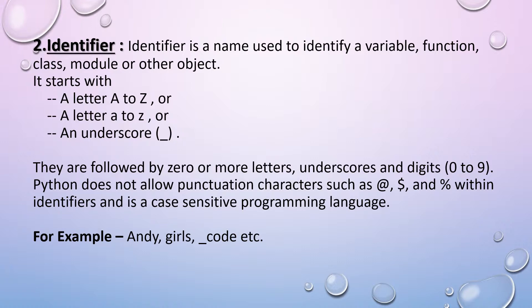So they are followed by zero or more letters, underscores and digits 0 to 9 means after using these three words in any of the identifier, we can follow it by any letter or digit or any of the punctuation characters like at the rate dollar or percentile. But these punctuation characters must not be allowed as a first character of the identifier. Also, Python is a case sensitive programming language means here, capital A N D Y and small a N D Y are the two different identifiers.